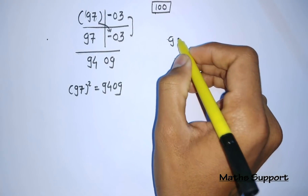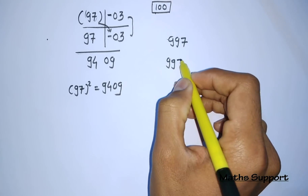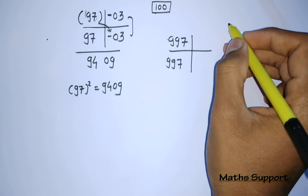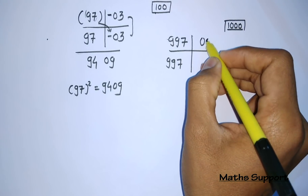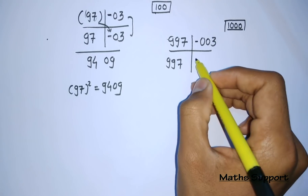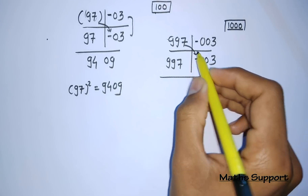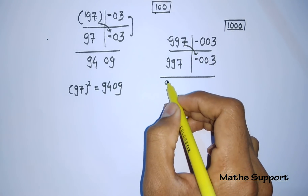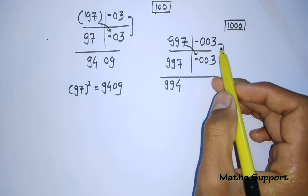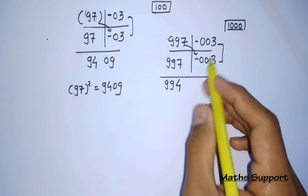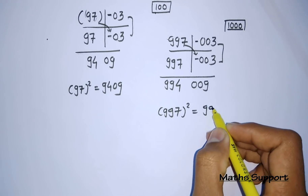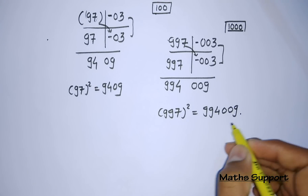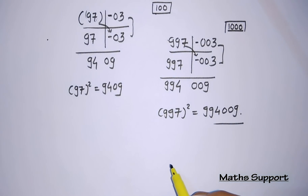Similarly, if you want to find the square of 997, we write this number twice. It is nearer to 1000, so the base is 1000. 997 is 3 less than 1000, so we write 003 for both. Adding cross: 997 minus 3 equals 994. Multiplication of differences: 3 times 3 equals 9, written in 3 digits as 009. So the square of 997 is 994009. That's very simple to find squares or multiply numbers using base 10, 100, 1000, or 10,000.